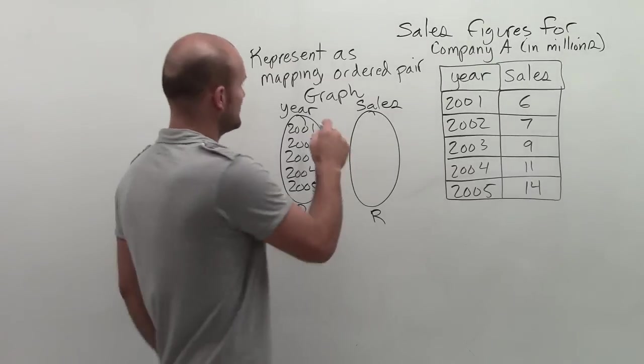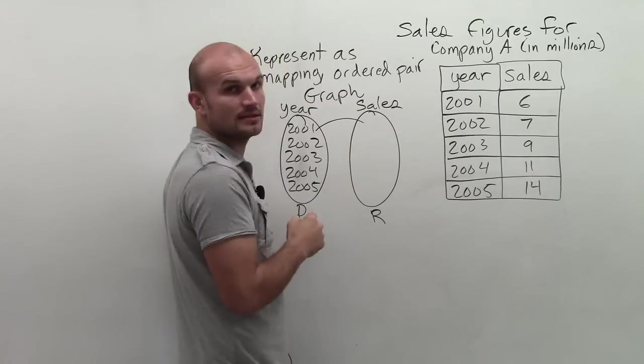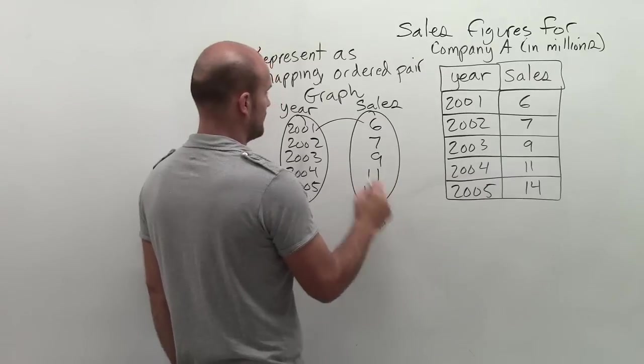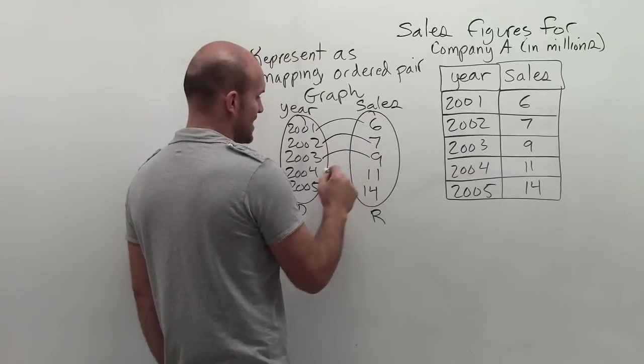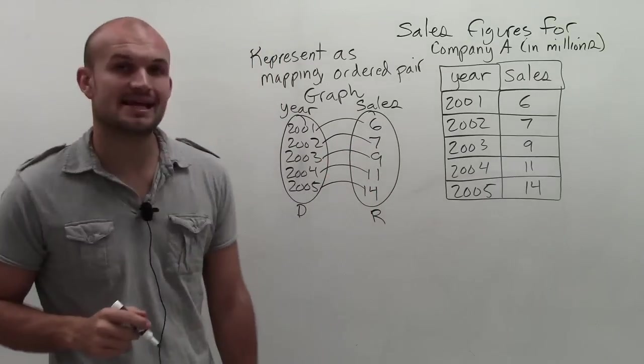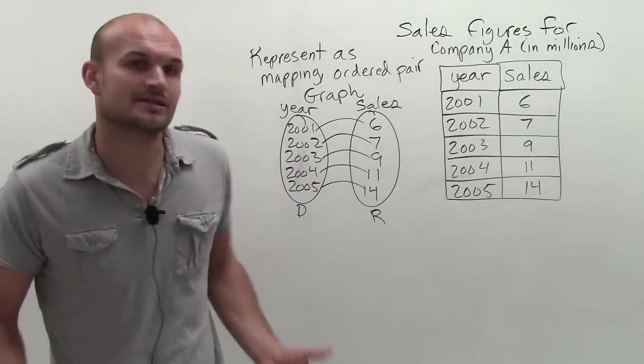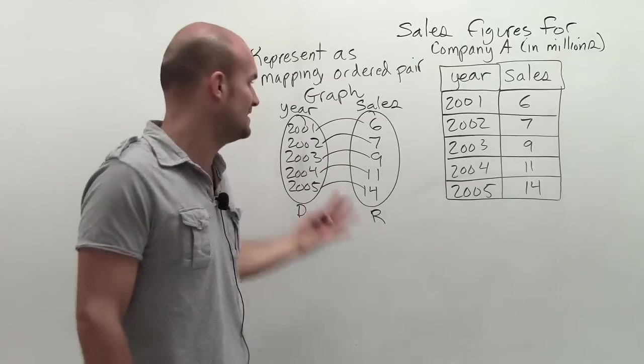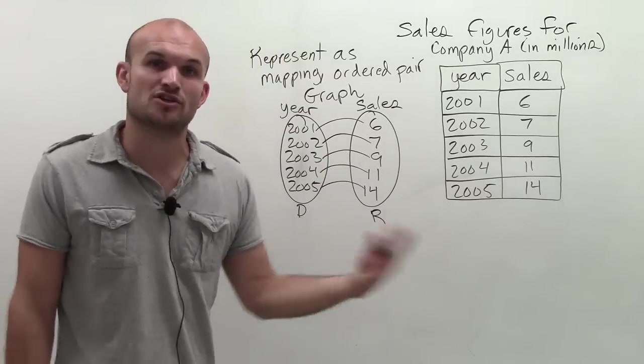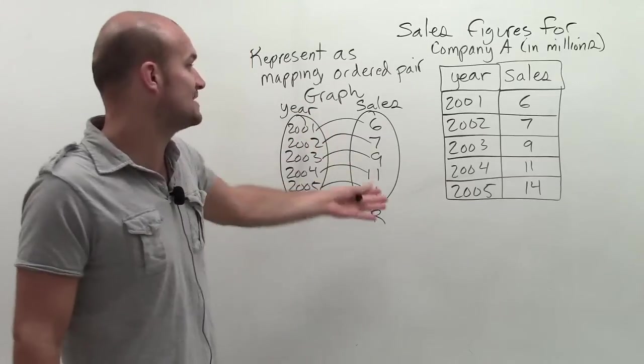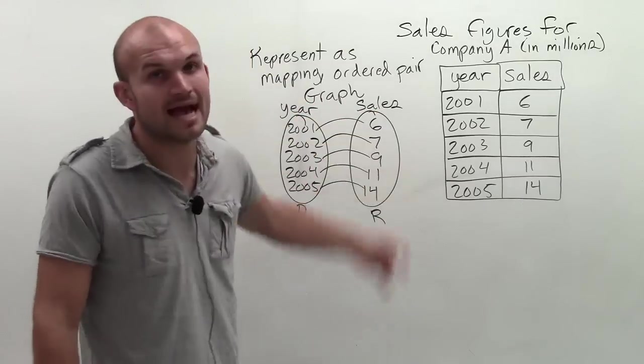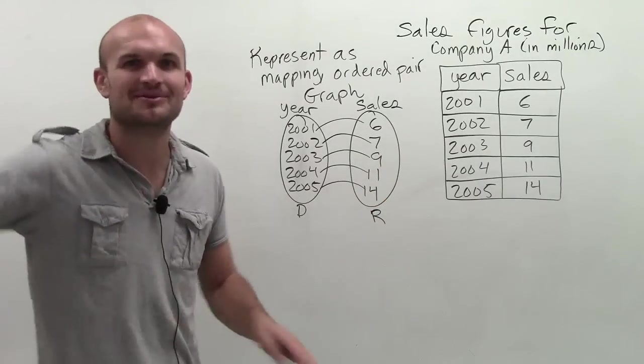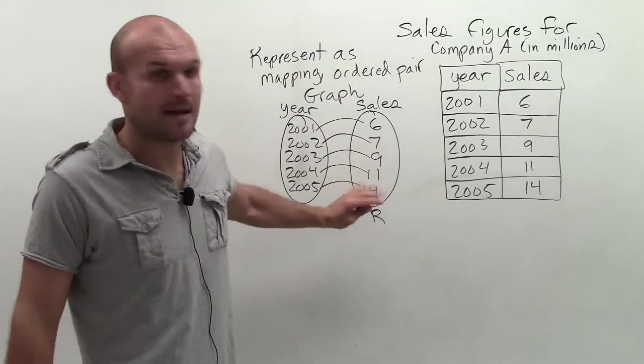Now remember for a mapping, 2001 maps to what number? Well, that's going to be 6, 7, 9, 11, and 14. So you just have every year mapped to its sales number. And this is very obvious. We like mapping, and the reason why we like mapping is it's a visual understanding for us to see if we have a function relationship or not, which in this case we do. Every domain maps to exactly one element of range. I don't know why I'm talking about functions. We don't need to worry about that right now. So anyways, that's how you do your mapping.